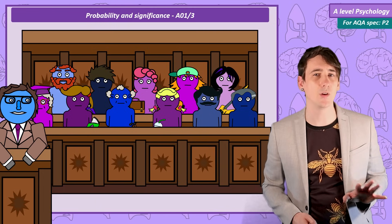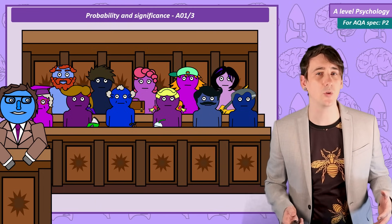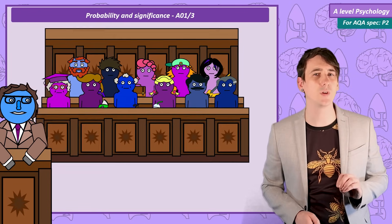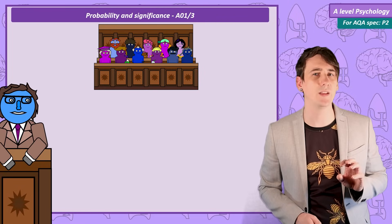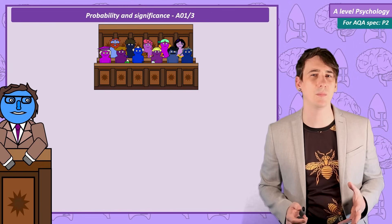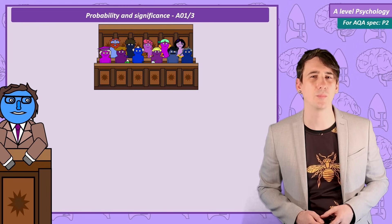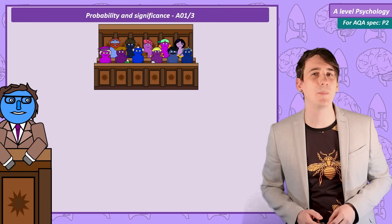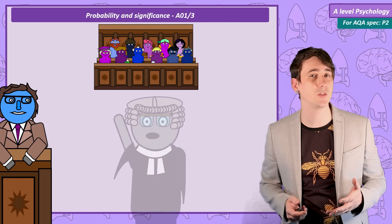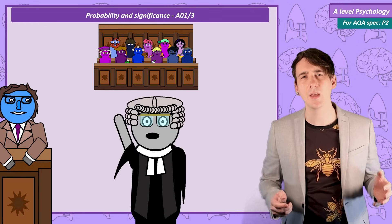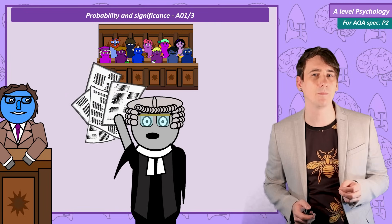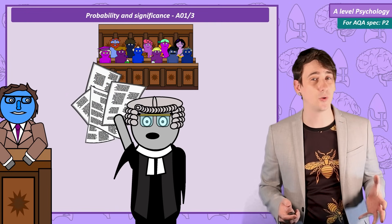Psychologists start by accepting the null hypothesis, the perspective that there's no cause and effect relationship between the IV and the DV. This is similar to the jury's starting perspective that the defendant is innocent until proven guilty. The alternate hypothesis is there's a cause and effect relationship between the IV and DV and this is similar to the prosecution's argument that the defendant is guilty. It's the prosecution's job to provide strong enough evidence that the defendant is guilty. This evidence needs to be strong before it's accepted by the jury.